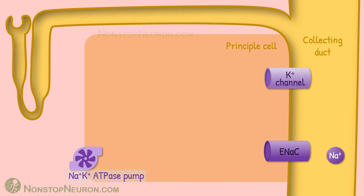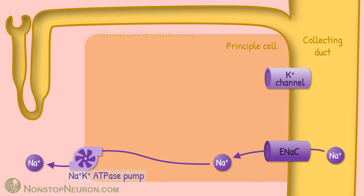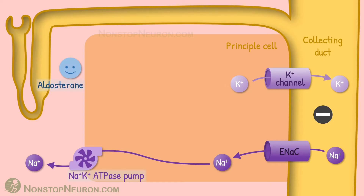As we have seen in the video of sodium reabsorption, sodium enters through the sodium channel into the cell and is extruded by the sodium potassium ATPase pump into the interstitium. As sodium is a positively charged ion, its removal from the lumen makes the lumen electronegative. This drives diffusion of potassium from the cell into the lumen. This potassium is eventually excreted. Sodium reabsorption here is regulated by aldosterone.